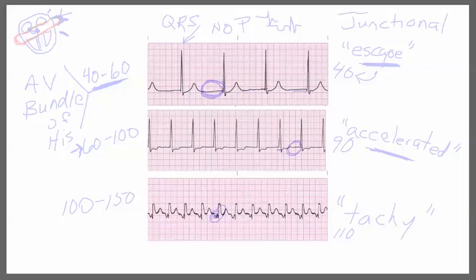On the third strip, the QRS is still within normal limits, although it may look a little wide. The P wave is inverted. In junctional rhythms, it will either present with no P wave — flat — or you'll see that inverted P. The inverted P wave here indicates that the problem is occurring at the junction. The QRS is responding adequately and is narrow. We're going to call this junctional tachycardia because the heart rate is 110.